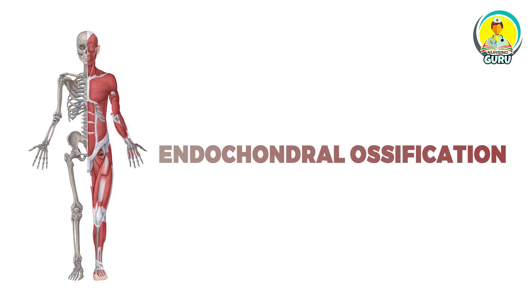Now I am moving to the endochondral ossification. In this ossification, there is a primary ossification center and a secondary ossification center. The primary ossification center develops during intrauterine life, usually around the 8th week stage of development. The secondary ossification center is part of the secondary bone and it develops after birth.